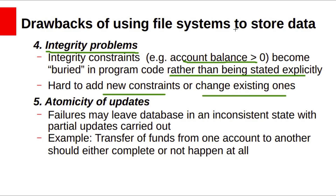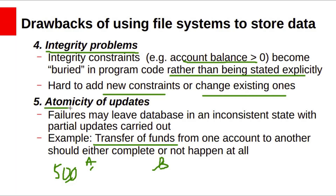Atomicity problems: In many applications, it is crucial that if a failure occurs, the data be restored to the consistent state that existed prior to the failure. For example, consider a transfer of funds from account A to account B — suppose 500 rupees needs to be transferred. It is possible that 500 rupees was debited from account A but not credited to account B, resulting in an inconsistent database state. A fund transfer must be atomic — it must happen either completely or not at all. It is difficult to ensure atomicity in a conventional file processing system.